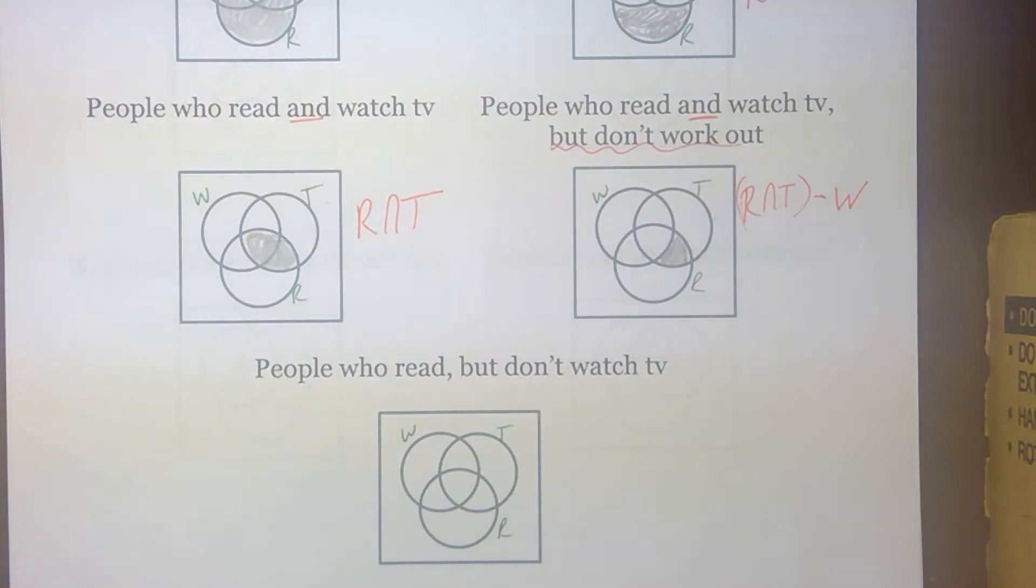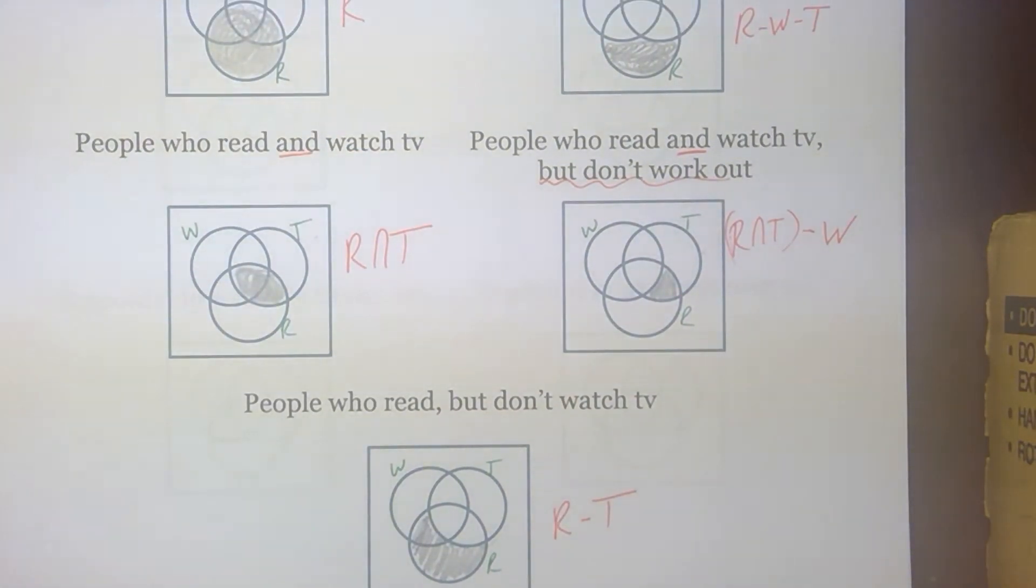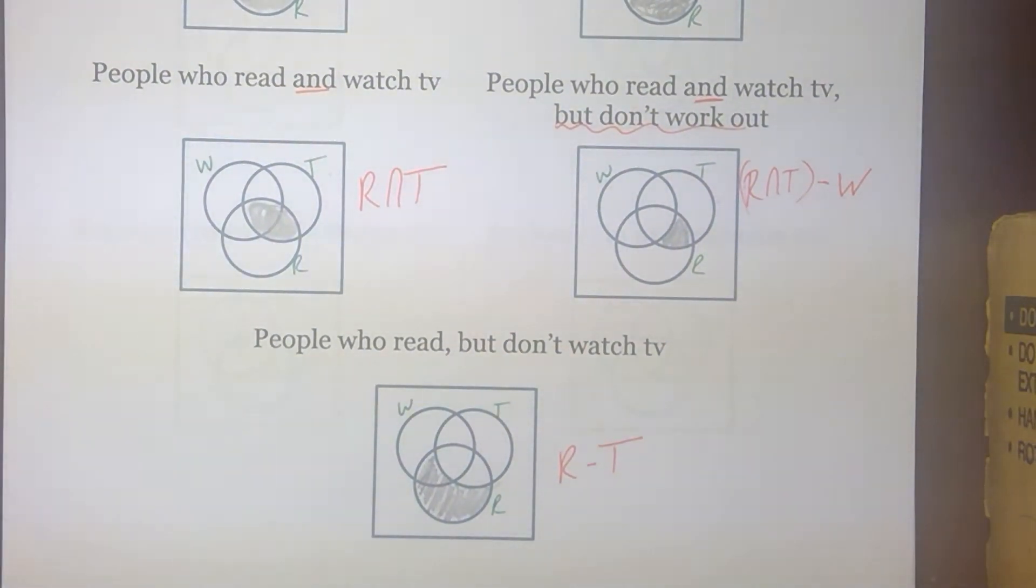And finally on this problem, people who read but don't watch TV. So we've got our read loop. We want to exclude the TV watchers. I didn't say anything about working out. We're not considering it right now. So we're looking at read minus my TV watchers. And we shade those two regions.